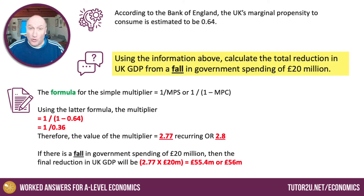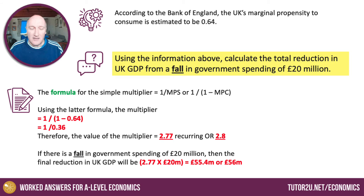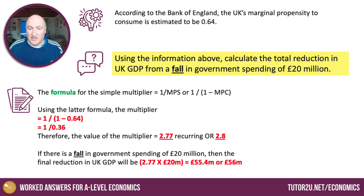Therefore, if government spending falls by £20 million, the final change in GDP will be the multiplier multiplied by the fall in G. So it'll be £20 million × 2.77, which equals a fall in GDP of £55.4 million. Or if we use 2.8 as our multiplier, 20 × 2.8 gives a fall of £56 million pounds.